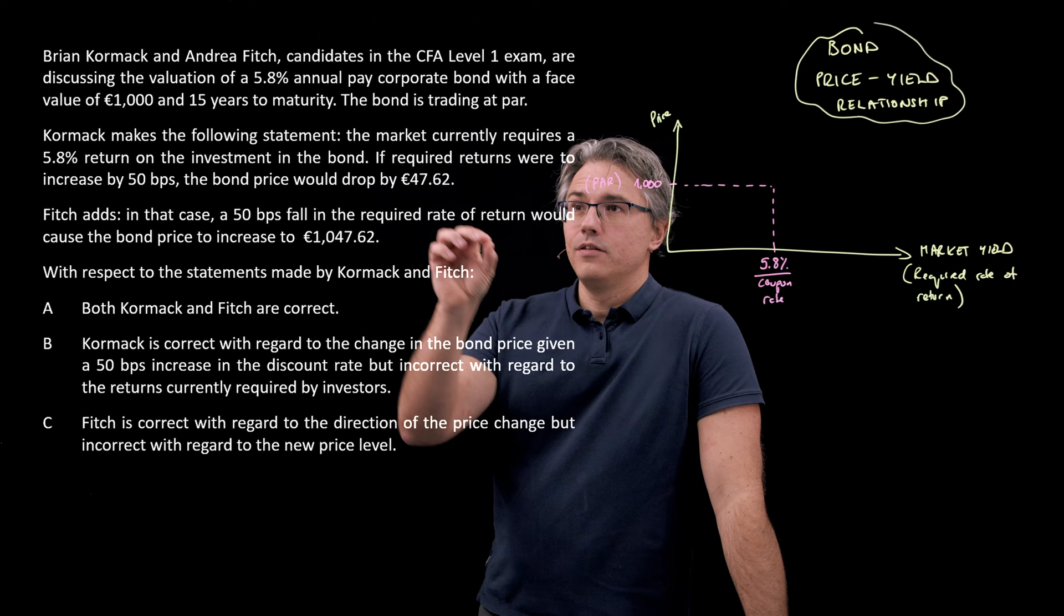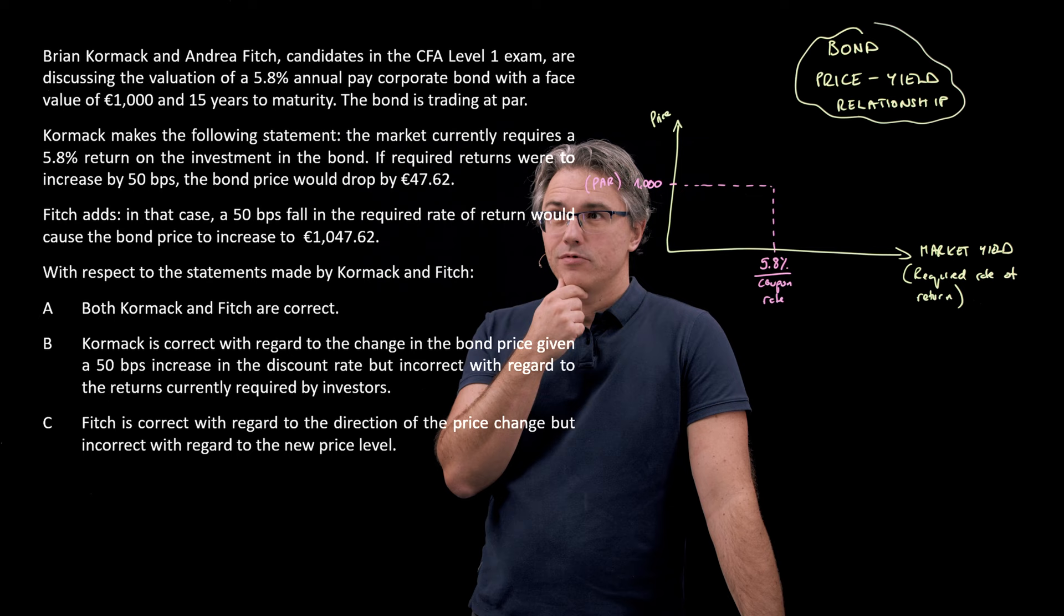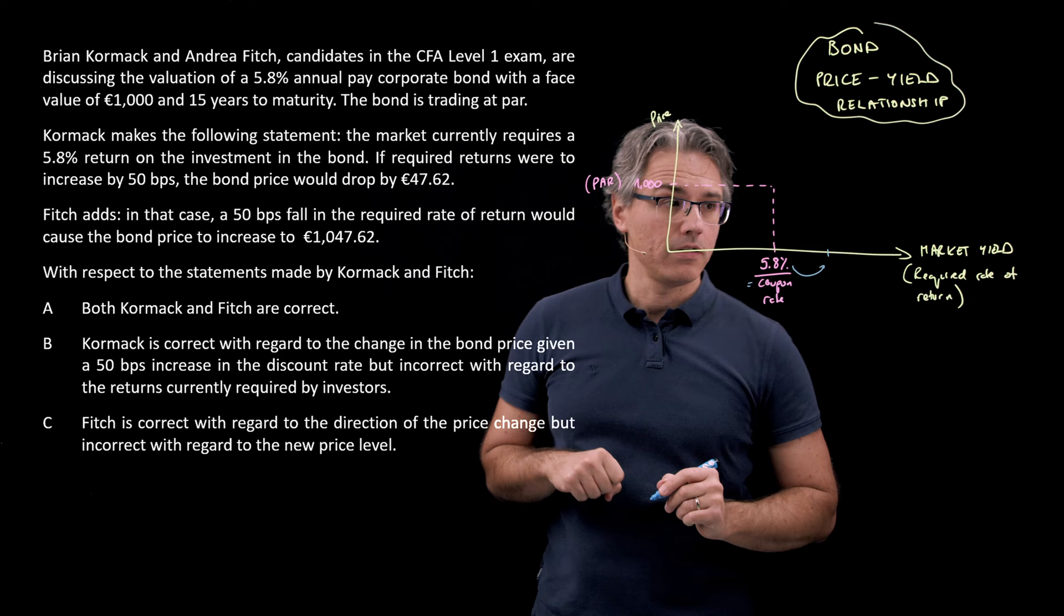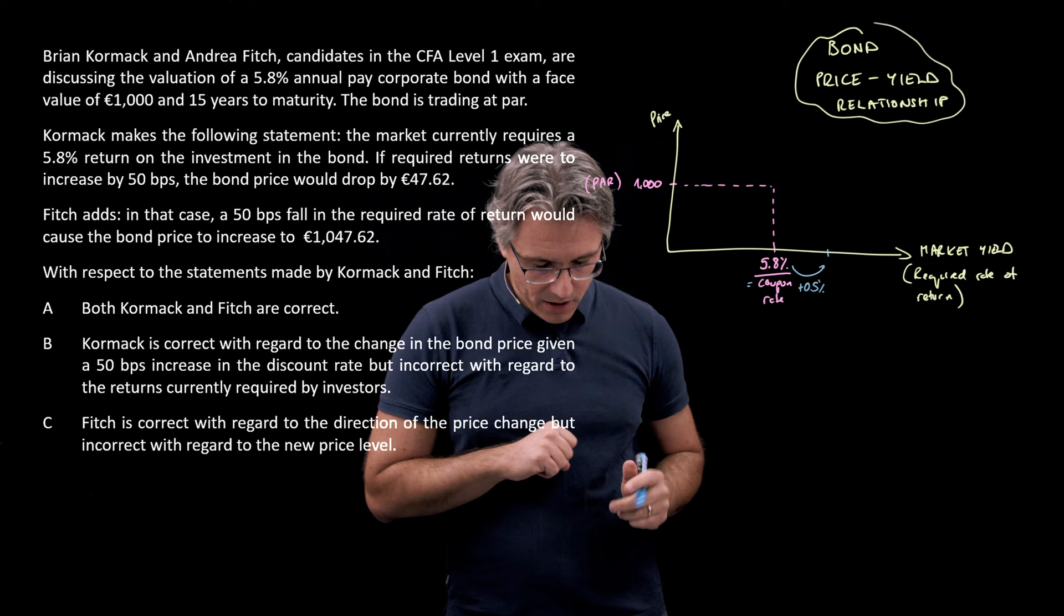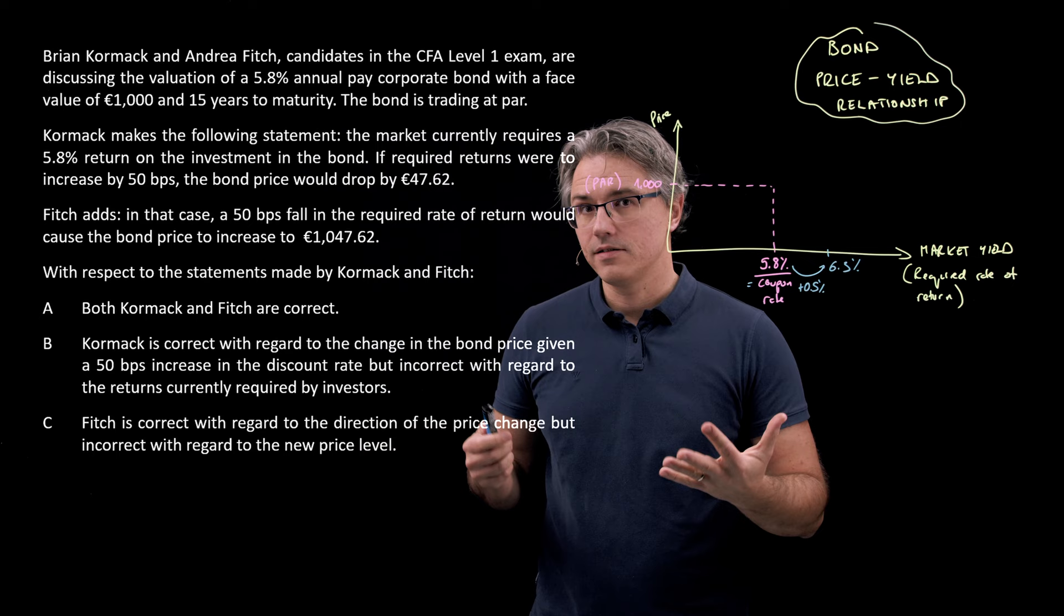What about the notion that if required returns were to increase by 50 basis points, the bond price would drop by 47.62? Well, generally speaking, the direction of the change is okay. Yes. If the level of return required by market participants goes up by 50 basis points, meaning by 0.5% up to a new level of 6.3, the bond would indeed experience a drop because its coupon would not be enough to compensate investors for the risk which they now see in this bond. Let's quickly compute what this would be.